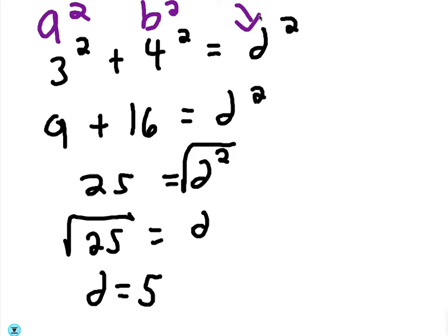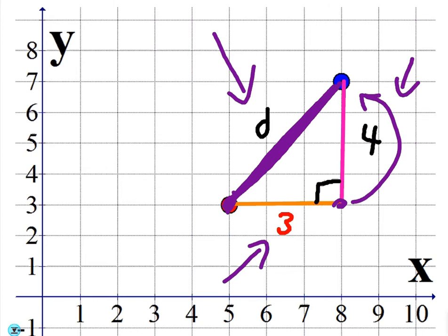So three squared plus four squared equals d squared. Simplifying: three squared is nine, four squared is 16, and nine plus 16 is 25. To solve for d, take the square root of both sides. The square root of 25 is five, so that side length is five.